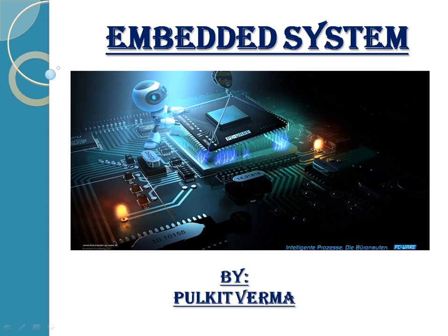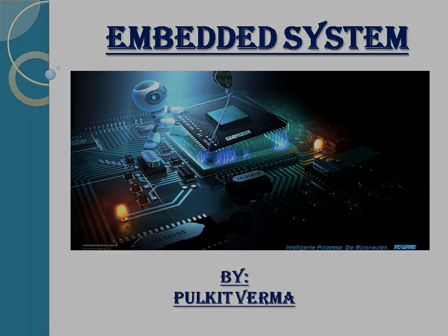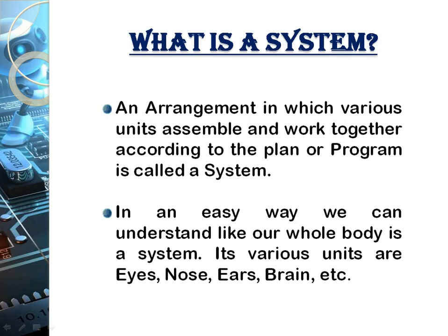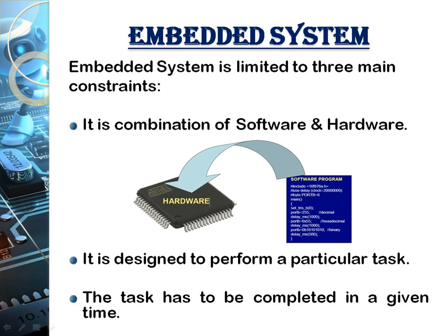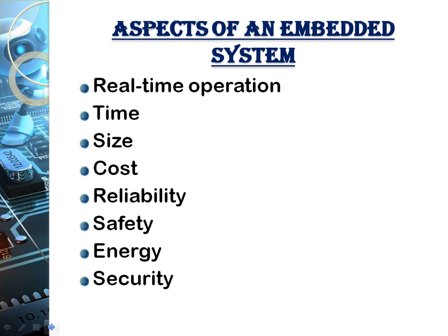Here we will start with the overview of what is an embedded system. First of all, what is a system? A system is a combination of various devices attached to perform a particular task. An embedded system stands for three constraints: first, it is a combination of software and hardware; second, it should perform a particular task; and third, it should do so within a particular time limit.